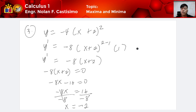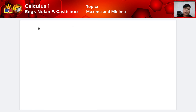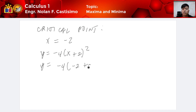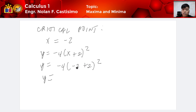Next we find the critical point where x is equivalent to negative 2. Substituting into the original formula y = negative 4(x + 2) squared: y = negative 4 times (negative 2 plus 2) squared = negative 4 times 0 squared = 0. So y is equivalent to 0. The critical point is (negative 2, 0).